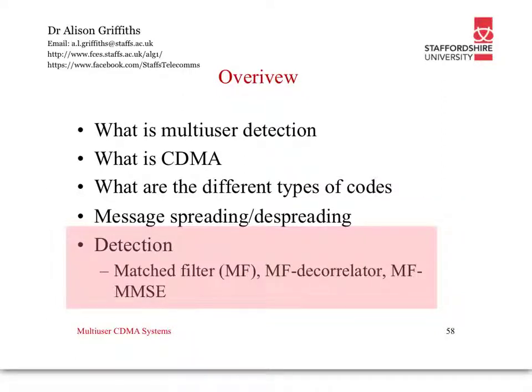So the final section, we've talked about message spreading and de-spreading, is the actual detection. Once we receive our signal, in reality, there are three different types of detectors. They're all known as the matched filter family, from the simplest to the more complex. It depends on the application as to what accuracy would be required and what the channel conditions are.